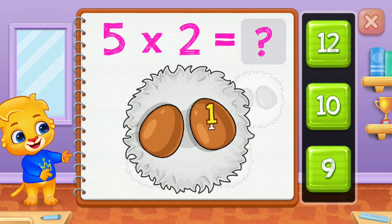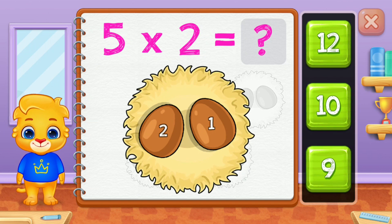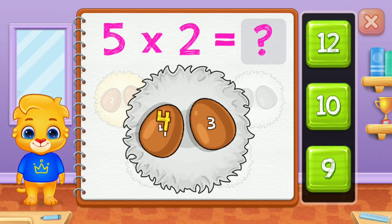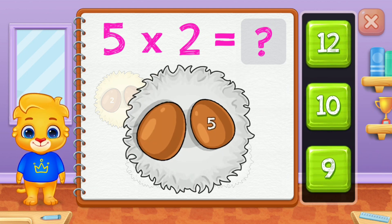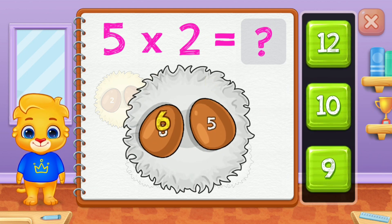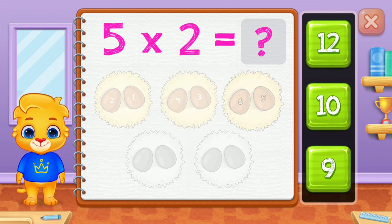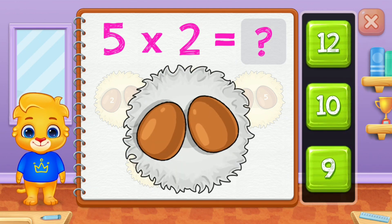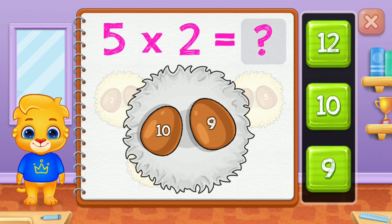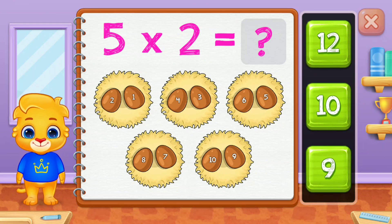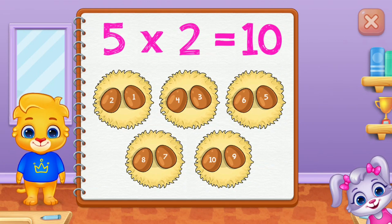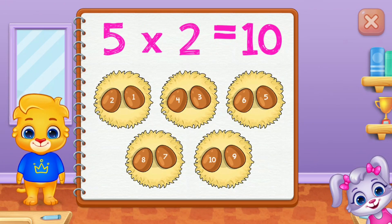One, two, three, four, five, six, seven, eight, nine, ten. Woohoo! Five groups of two equals ten.